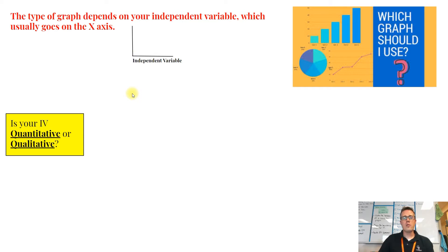So here's the flowchart — the first step. On your paper, you need to fill in these boxes. The very first step is figuring out: is your independent variable quantitative or qualitative?